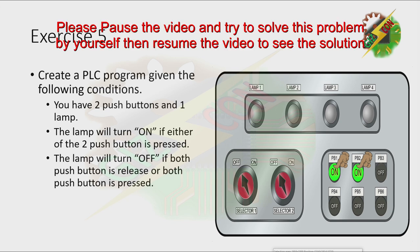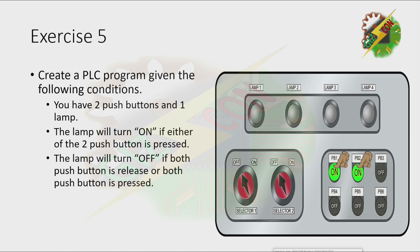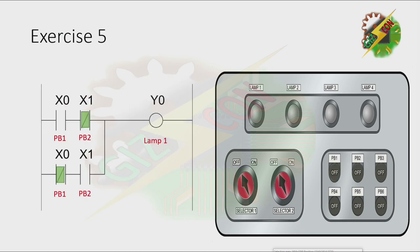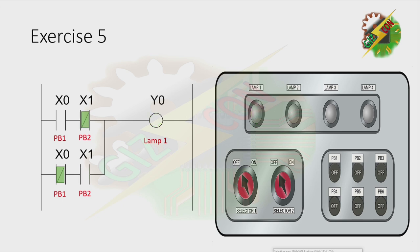Okay, I want you to pause this video and try to solve this problem. Then you can resume the video to reveal the answer. The answer for this exercise: when I press PB1, Y0 or lamp 1 will be energized. When I press PB2, lamp 1 will turn on also. When I press both PB1 and PB2, nothing will happen. And that's how we solve Exercise 5.